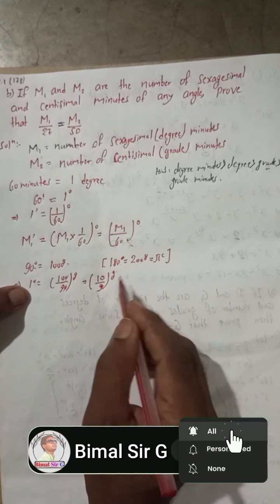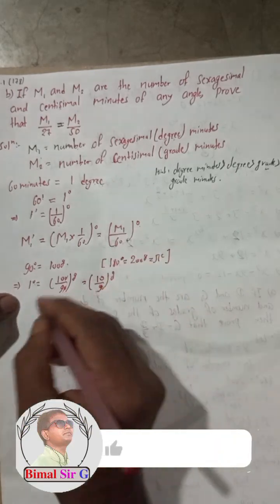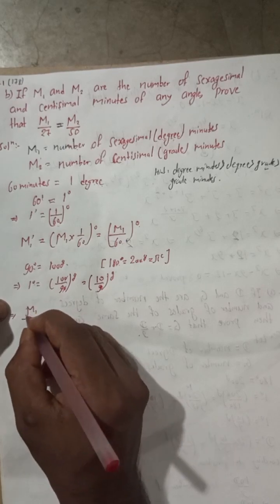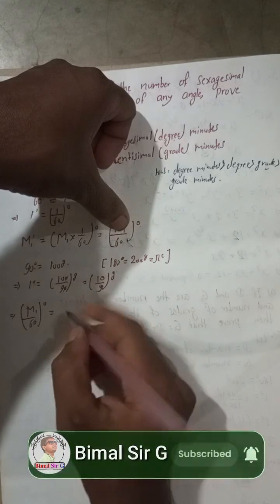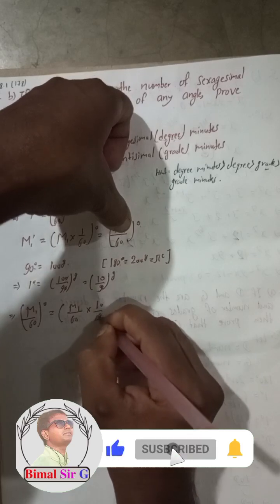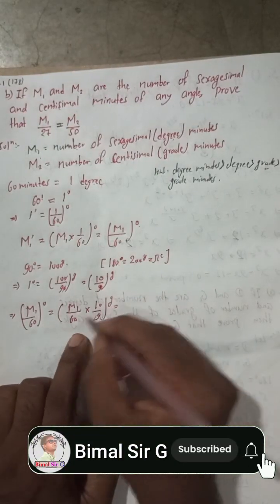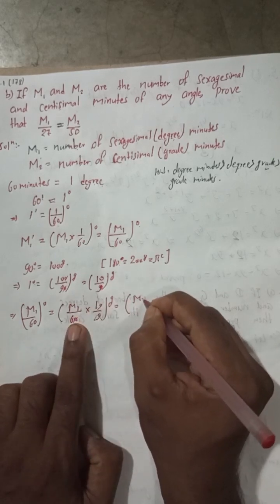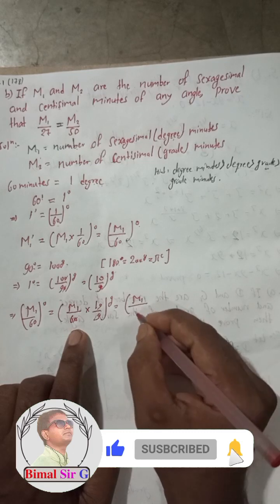So one degree equals 10/9 grade. Now I want to convert m1/60 degrees into grades. I multiply both sides by 10/9, giving m1/60 × 10/9 grade. Cancelling the zeros, this becomes m1/(6 × 9) grade, which is m1/54 grade.